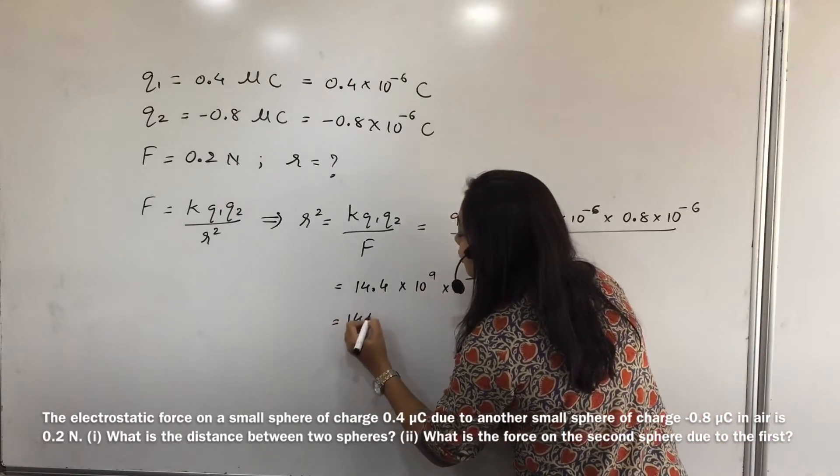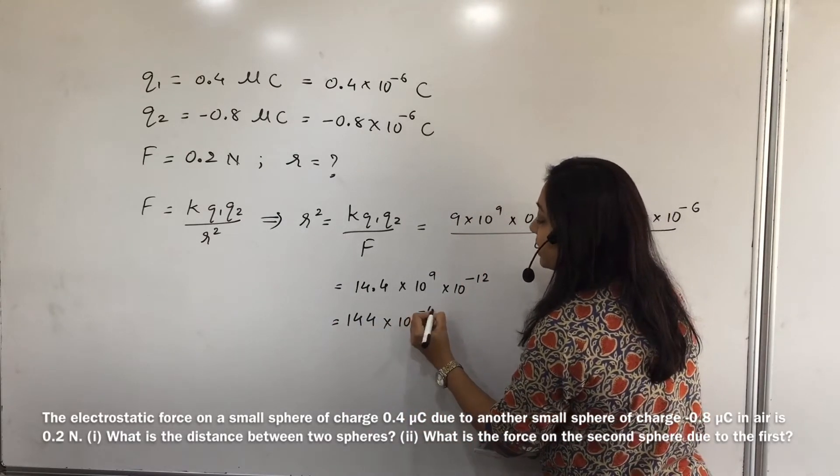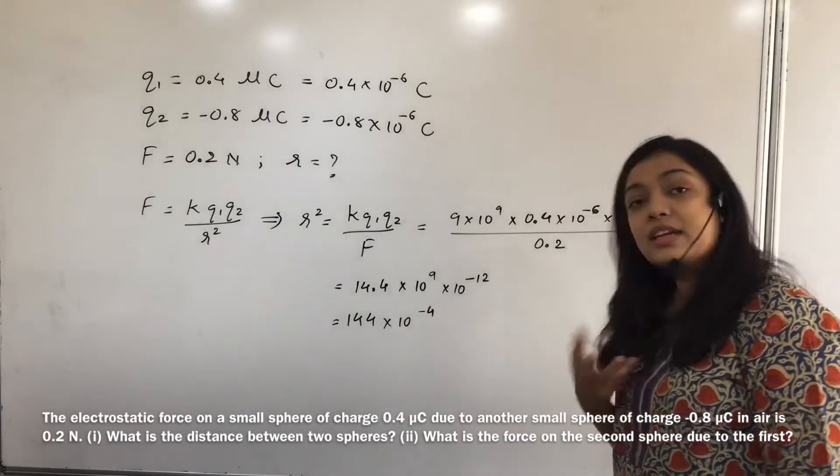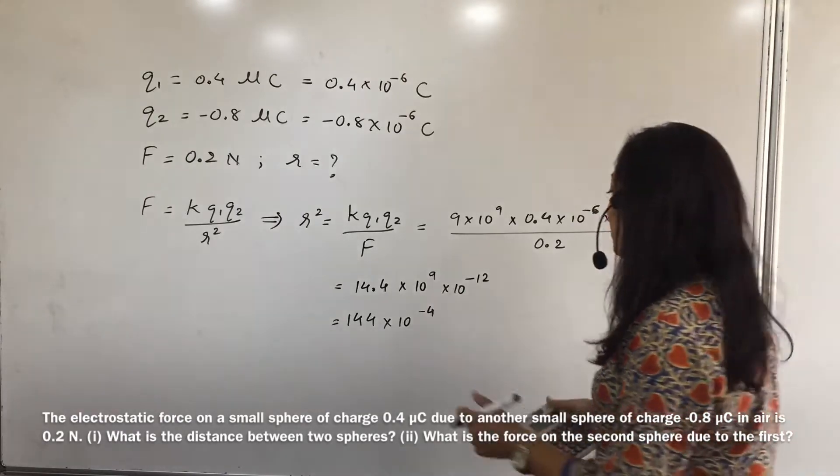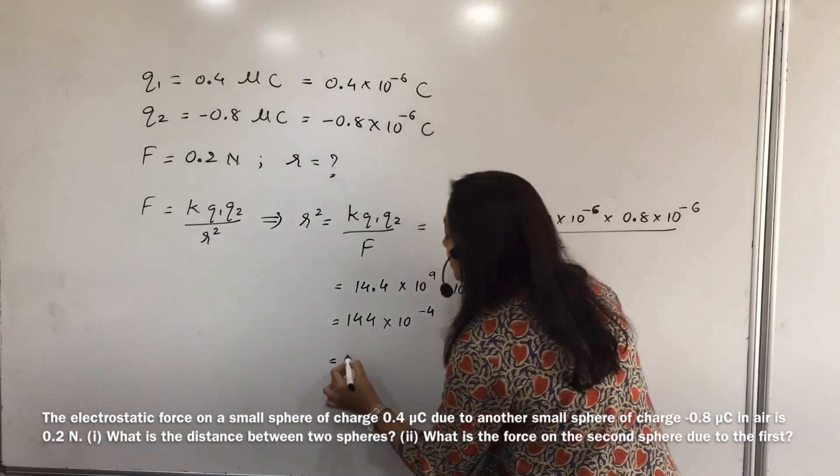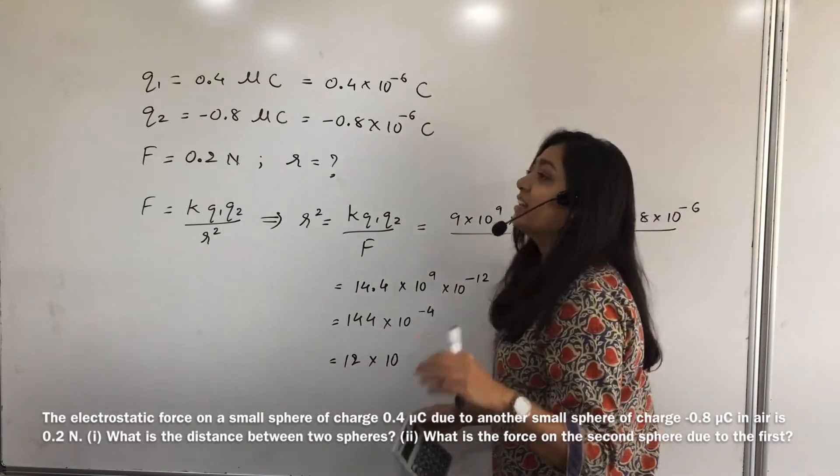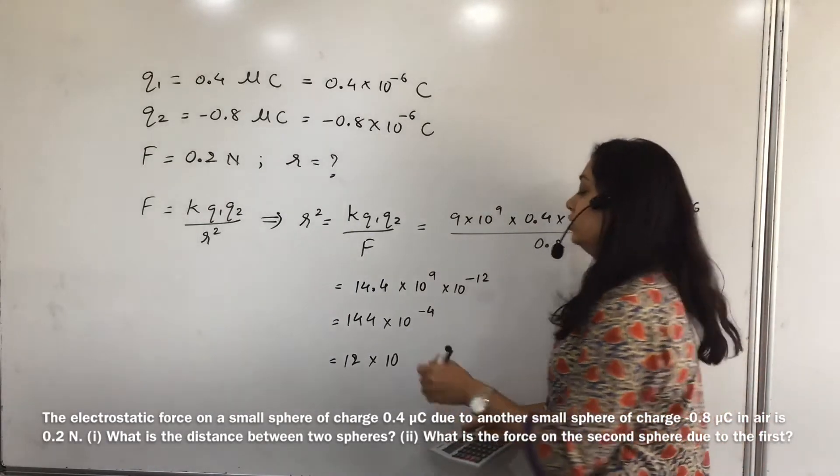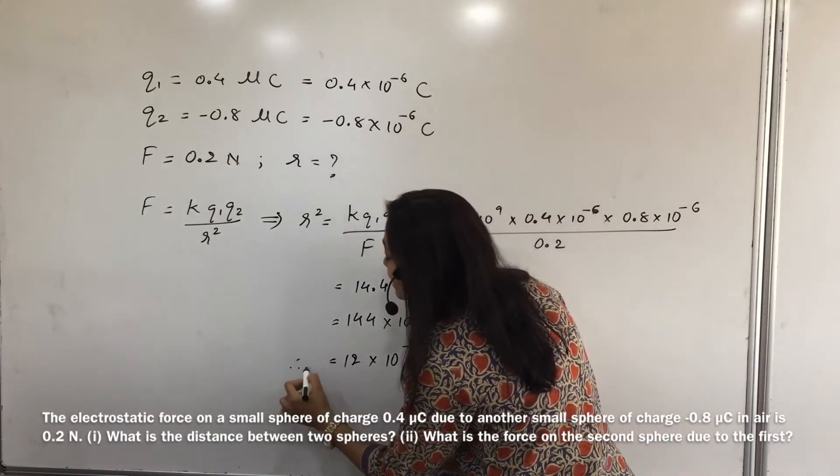Okay, now 10 to the power. 9 mein se ek 10 nikal ke yaha pe attach kar denge. So that will give us 144 into 10 to the power. 8 bacha tha power minus 12, so this will be minus 4. Why this thing we have done? Jinko maths nahi aata, meri tarah, unko calculator use karne ki ichcha hogi na. That's why. Okay. So 144 ka square root kya hota hai? 12 into 10 to the power. Anything to the power when it is getting in the form of root, to uska aadha ho jaega. So this will be minus 2 and this is what we have found out as r, the distance between two given charges.